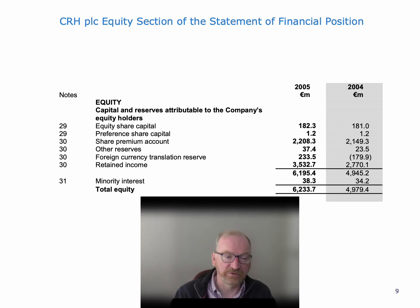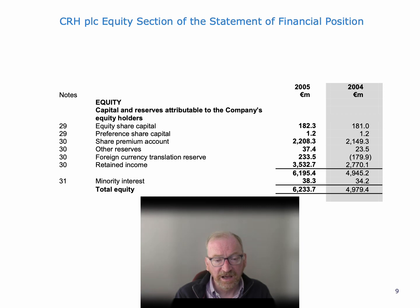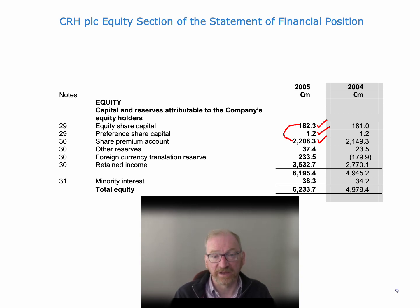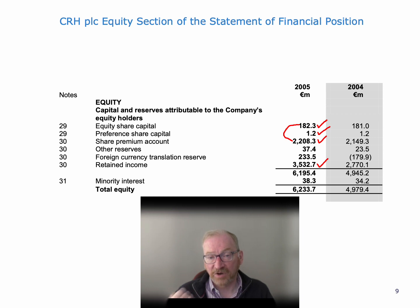Looking at CRH's balance sheet as an example: the equity share capital is the par value of the ordinary shares multiplied by the number of shares in issue. The preference share capital is 1.2 million — a tiny amount for CRH. The share premium account is an awful lot bigger than the issued share capital; adding these two together gives the amount actually invested by shareholders in the business. Retained income, at 3.5 billion, represents the profits of CRH accumulating since it was founded minus any dividends paid out.